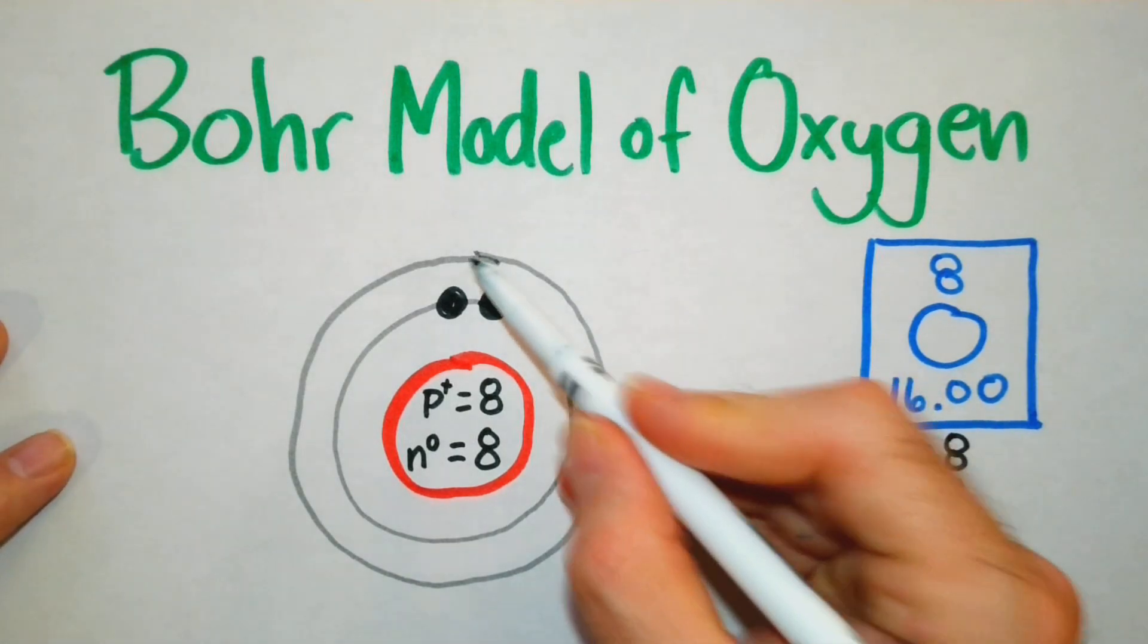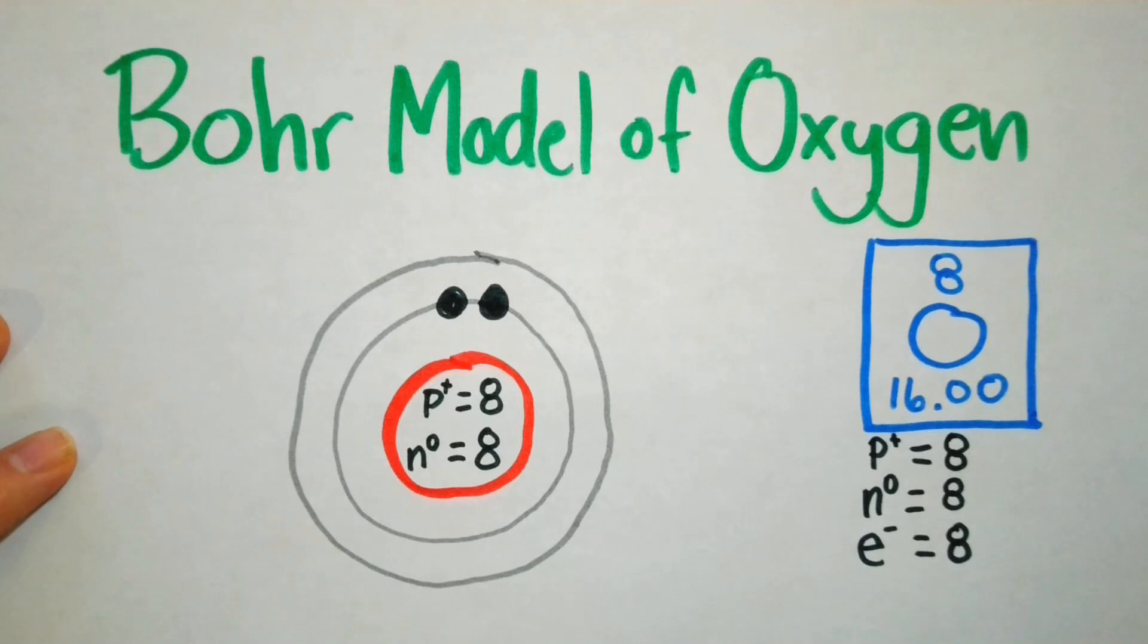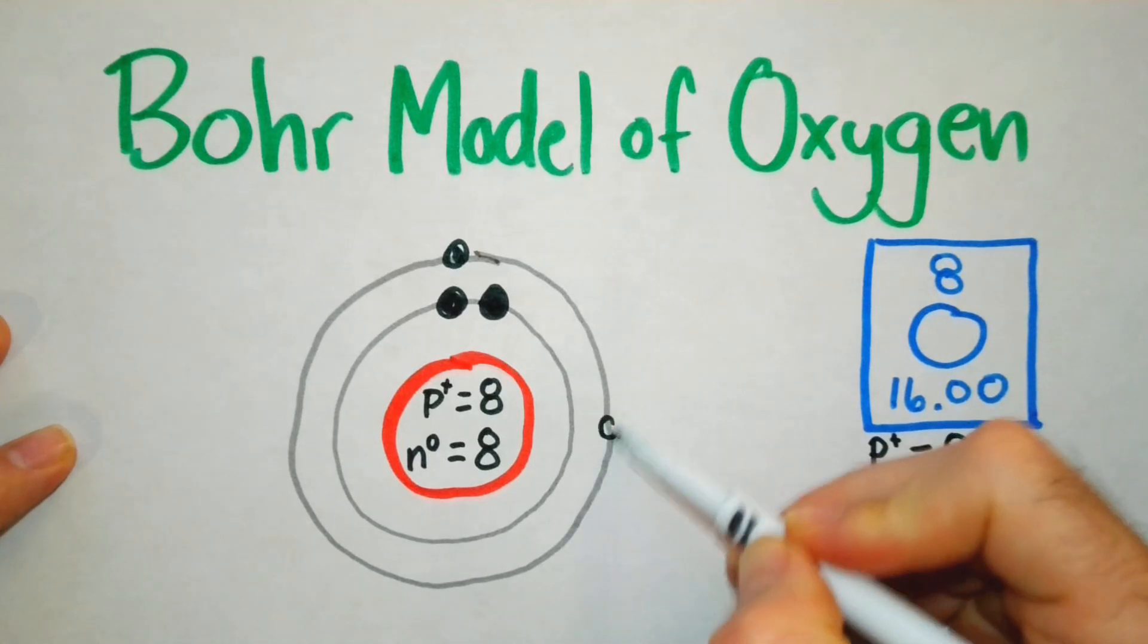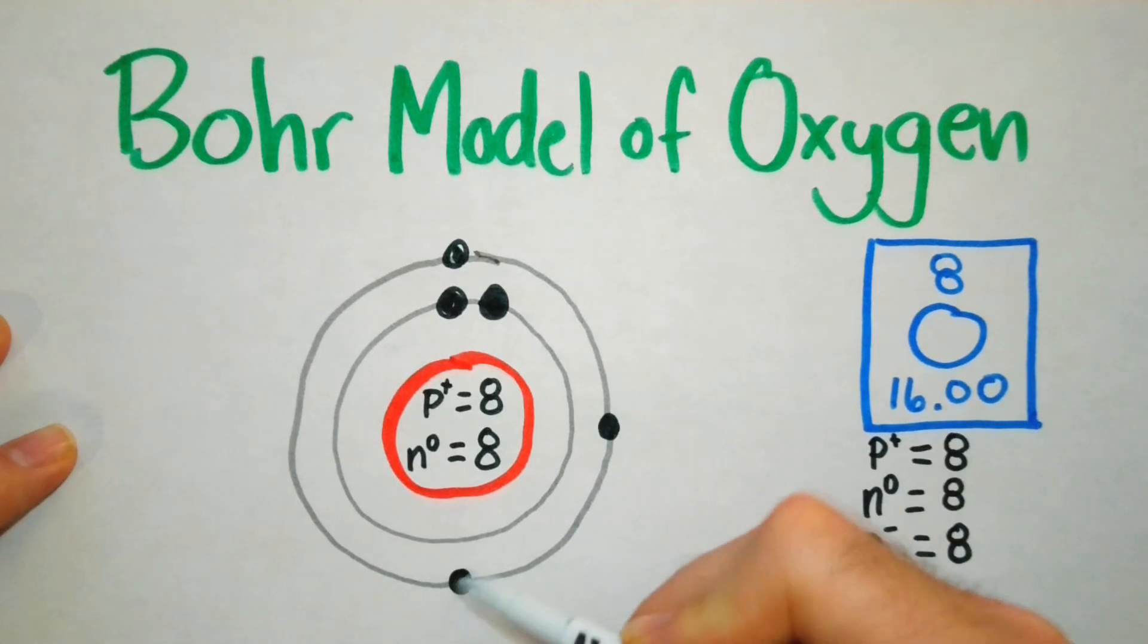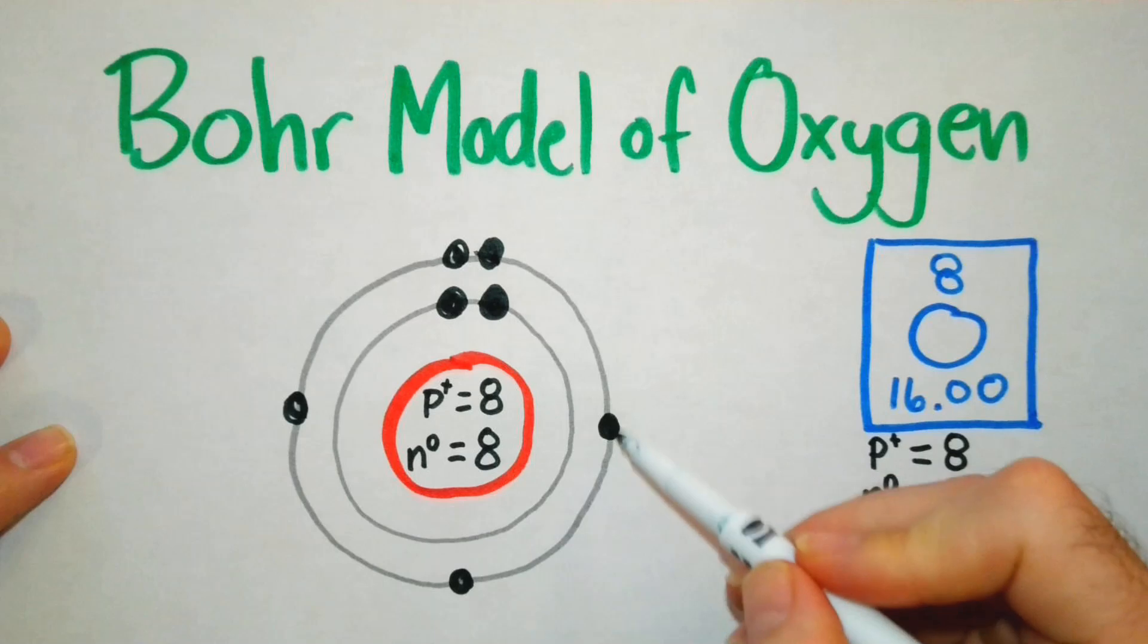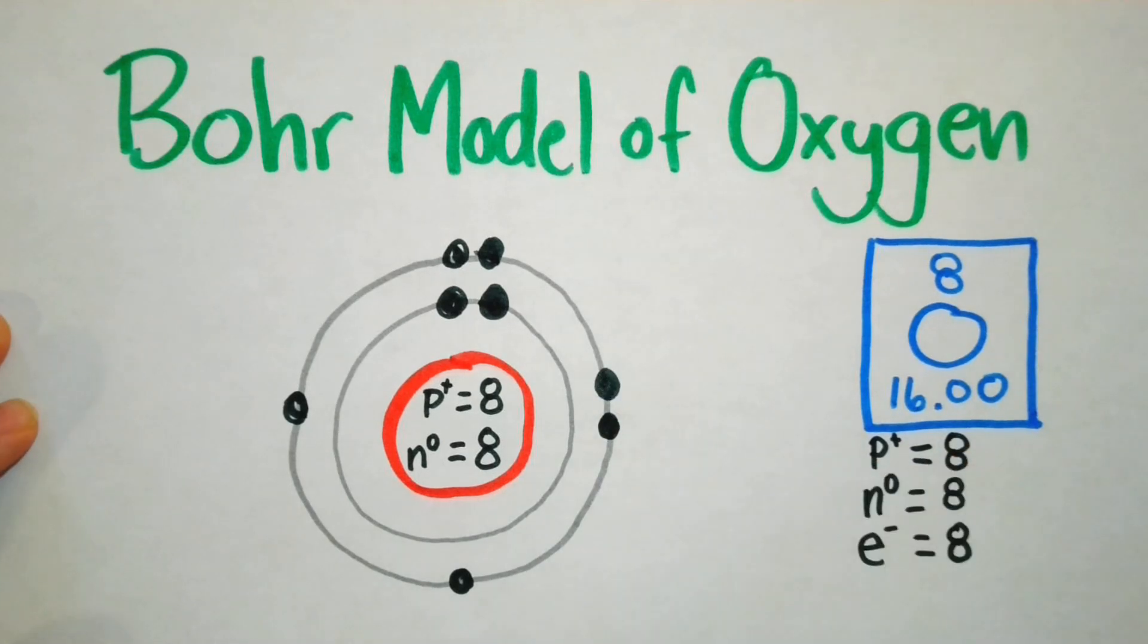We are not going to pair these electrons until we have to. We don't have to until we have the fifth electron in that shell. So let's just go ahead: 1, 2, 3, 4. So now we have a total of six electrons so far. We still need two more. Here's the fifth electron in that shell and here's the sixth electron in that shell.